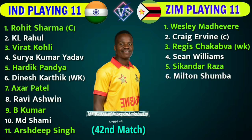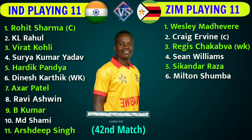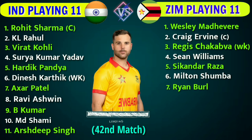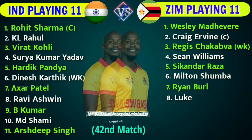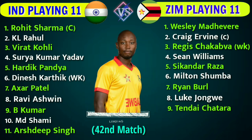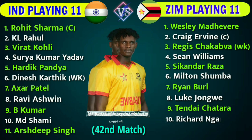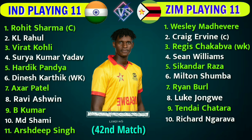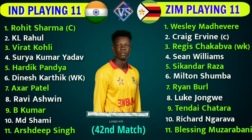No. 6: Milton Shumba, Left-Handed Batsman. No. 7: Ryan Burl, Left-Handed Batsman. No. 8: Luke Jongwe, Right-Handed Fast Bowler. No. 9: Tendai Chatara, Right-Handed Fast Bowler. No. 10: Richard Ngarava, Left-Handed Fast Bowler. No. 11: Blessing Muzarabani, Right-Handed Fast Bowler.